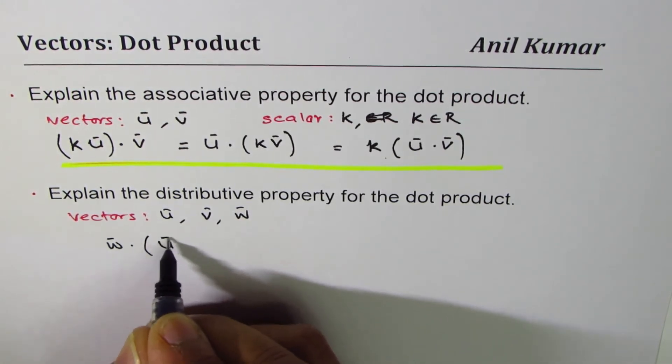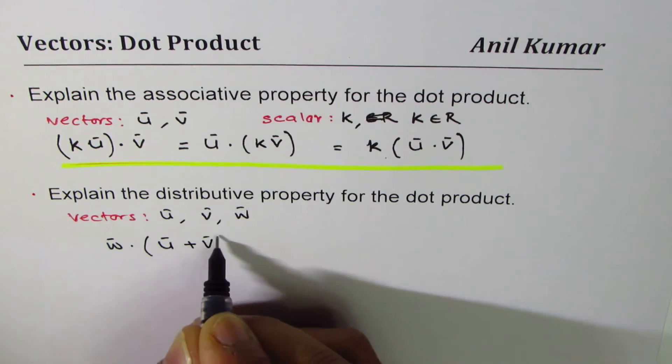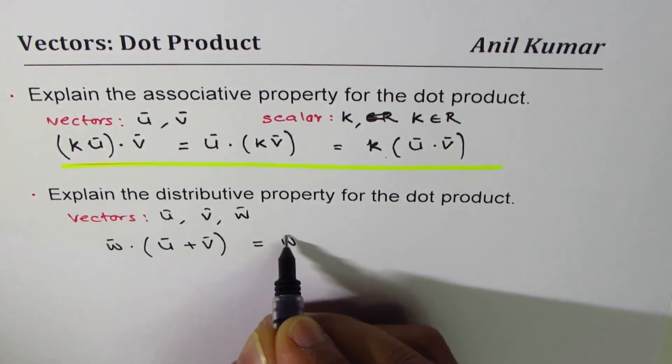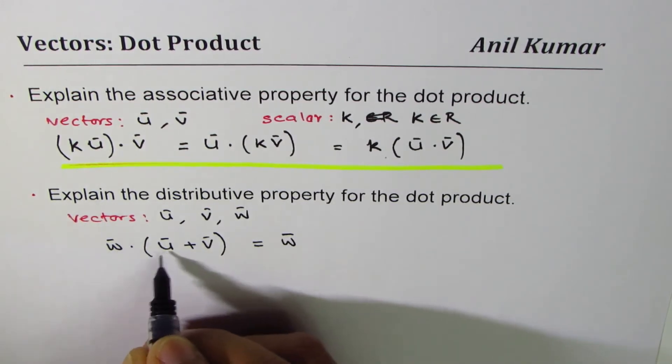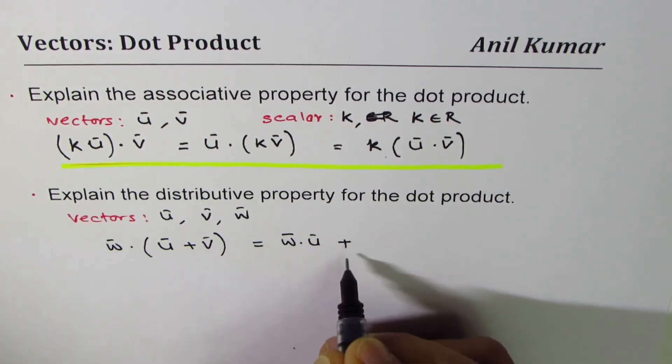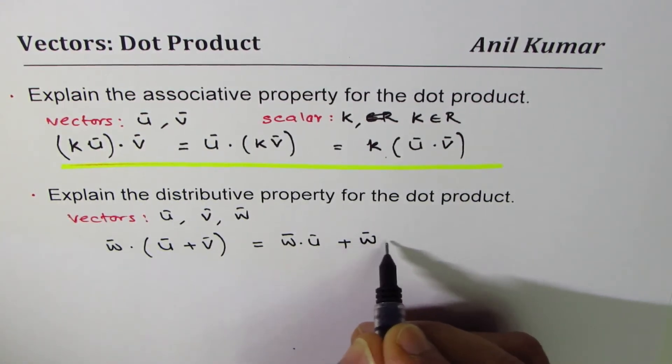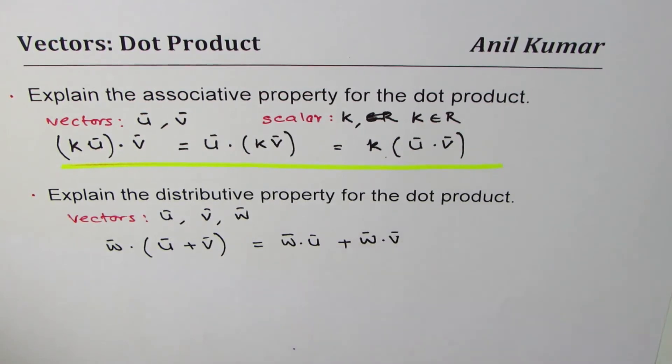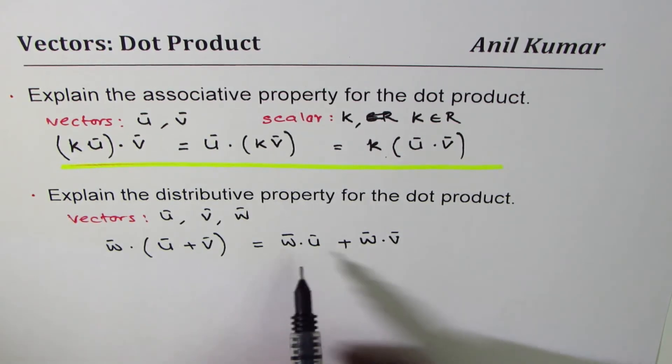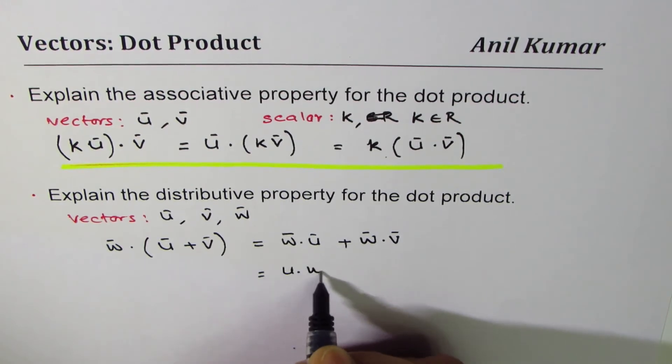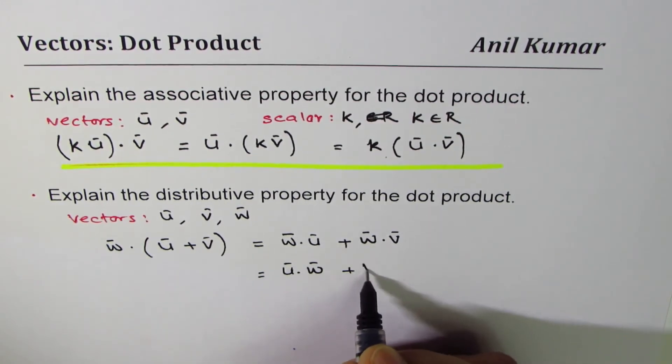In that case, we could write this as vector w dot sum of these two, which is u plus v. Now that could be written as w·u plus w·v. The dot product is always between vectors, you understand? This could be written as u·w - I mean we could change the order.